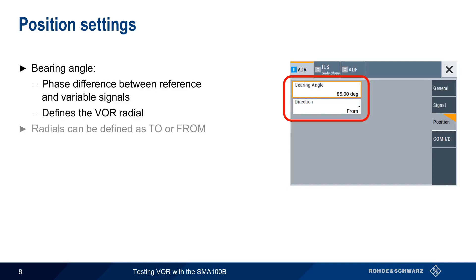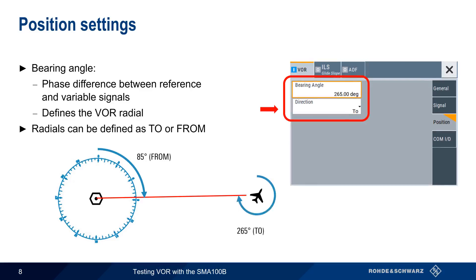Note however that we can designate a radial as either to or from. For example, this aircraft is on the 85 from radial because the angle from the VOR to the aircraft is 85 degrees. We could also express this as the angle from the aircraft to the station, which would be 85 plus 180 or 265 degrees. The signal produced by the SMA is exactly the same in both cases.